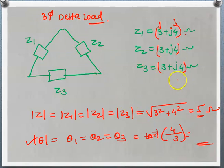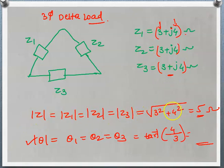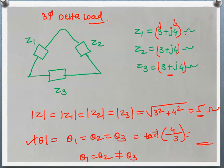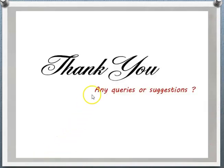If instead one impedance had a negative sign — say Z3 = 3 − j4 — the magnitudes remain equal (first condition satisfied), but the phase angle of Z3 becomes negative, so θ3 ≠ θ1 = θ2. In that case the load is called a three-phase unbalanced delta load. This is the difference between balanced and unbalanced load.